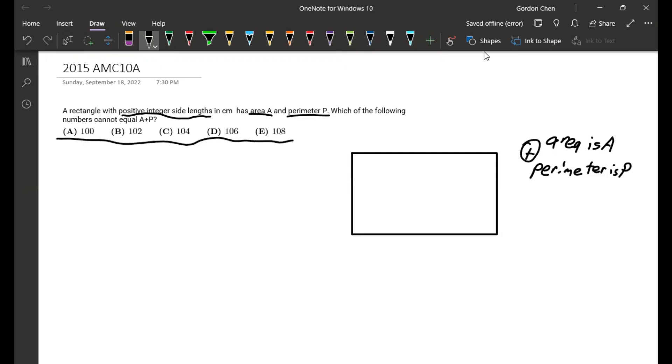These are the choices. So it's a rectangle with dimensions A and B, so the area is AB and then the perimeter is 2A plus 2B.